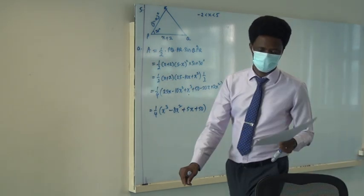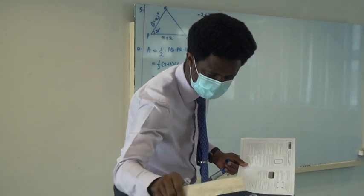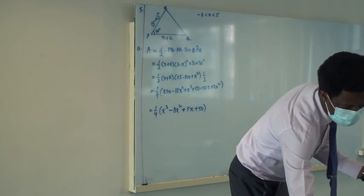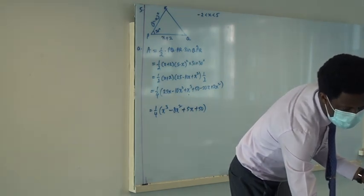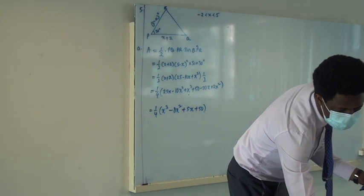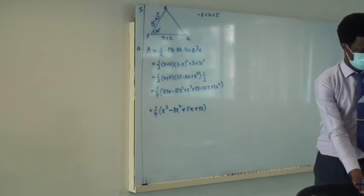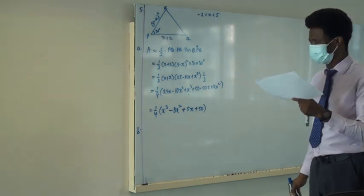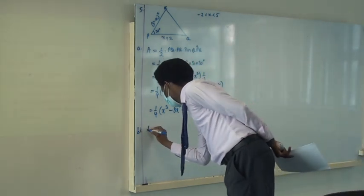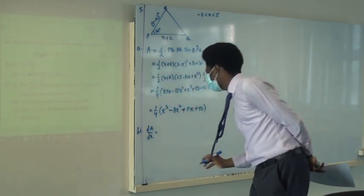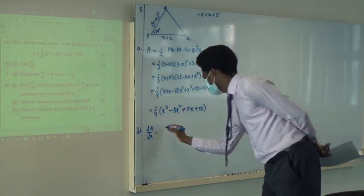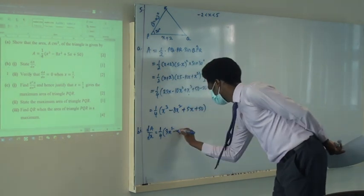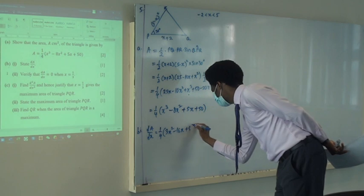We have just done the A part, let's go to B. B1 states dA/dx. The dA/dx is 1 over 4, 3X squared minus 16X plus 5. That's it.